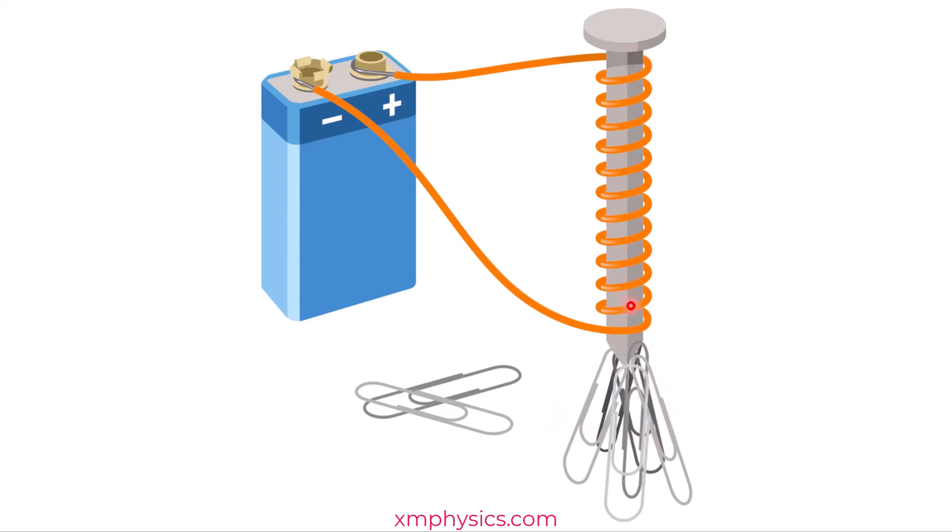So the nail was inserted to make it an iron core solenoid. Suddenly, you have a very strong magnetic field. Why is that so?